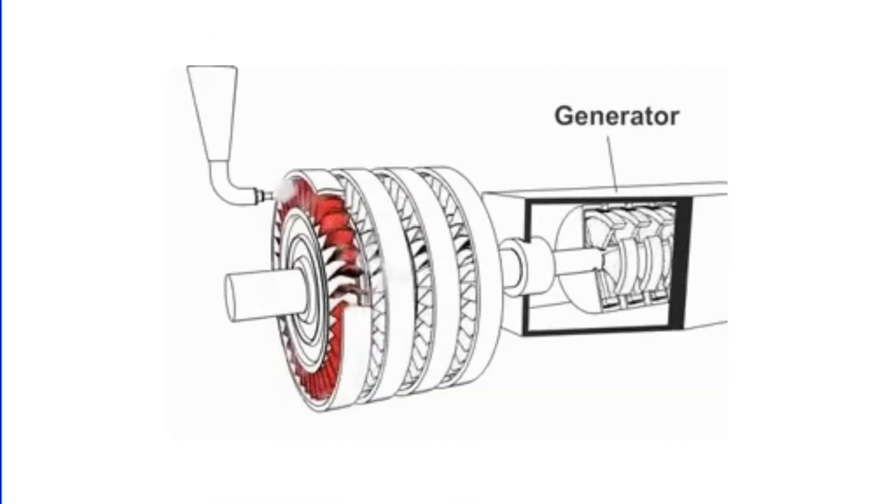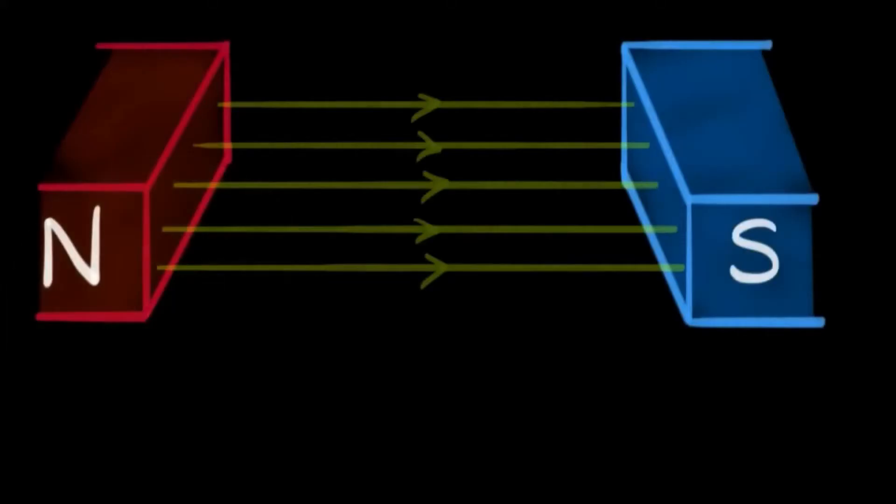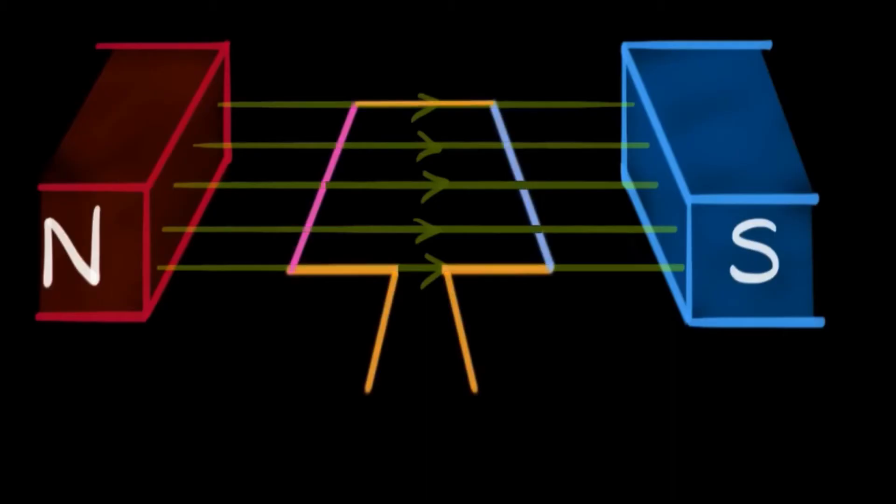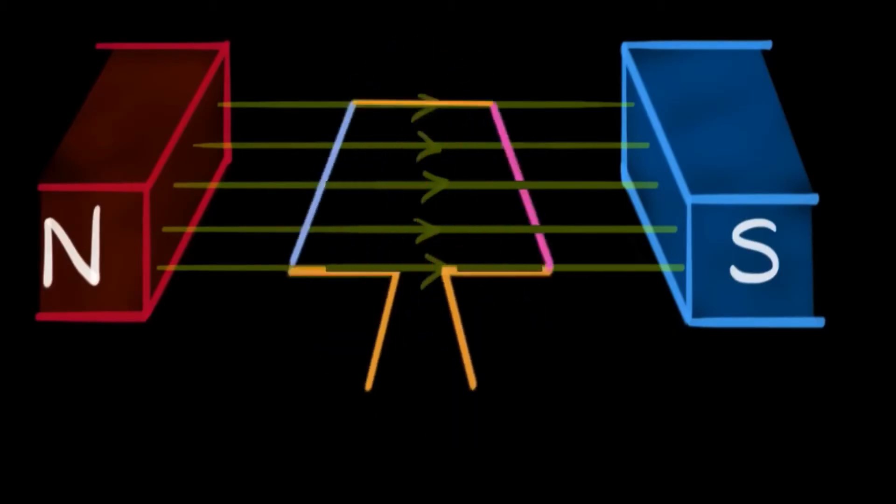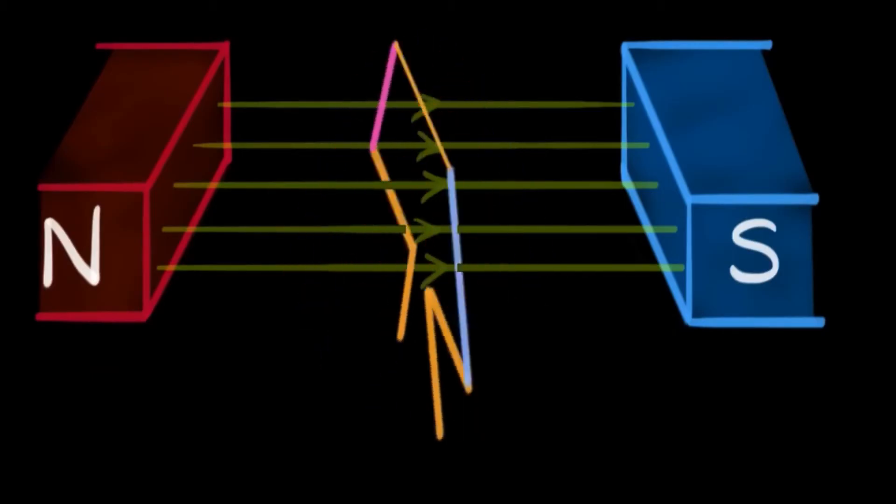When a prime mover, such as an IC engine or turbine, drives the generator, it sets the shaft and consequently the armature into motion. As the armature spins, each conductor with a winding cuts through the magnetic field established by the poles and field winding. According to Faraday's law of electromagnetic induction, an EMF is induced in each conductor.